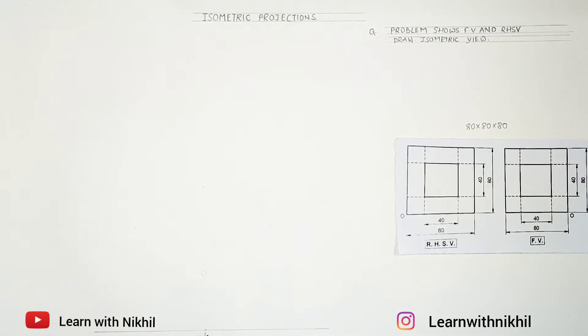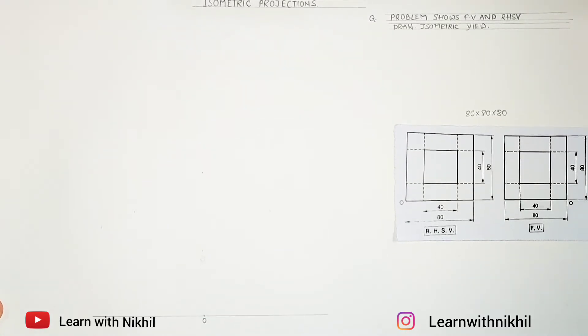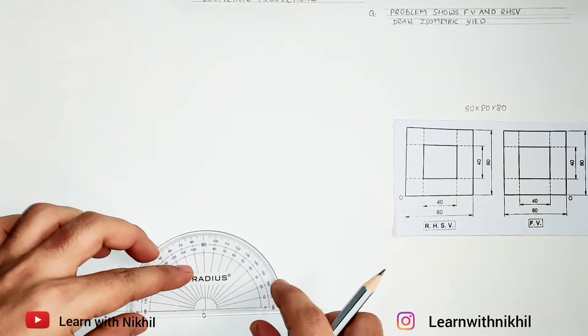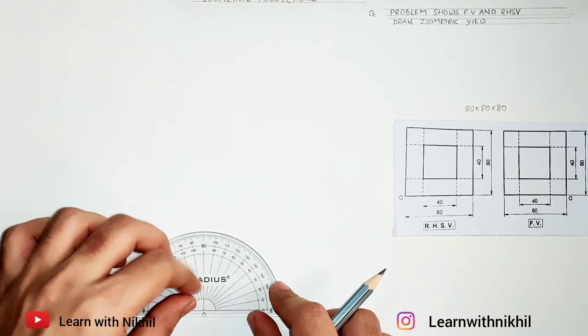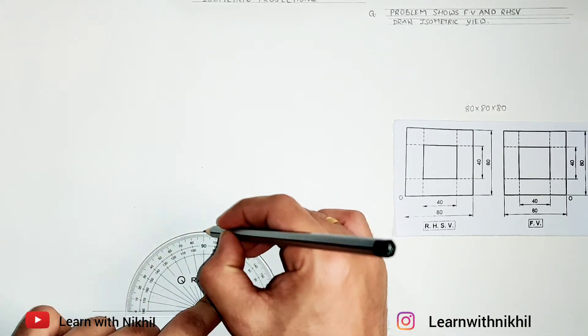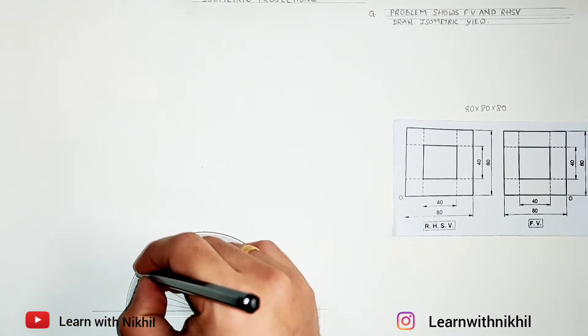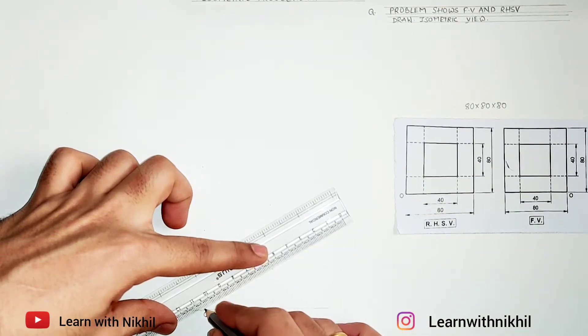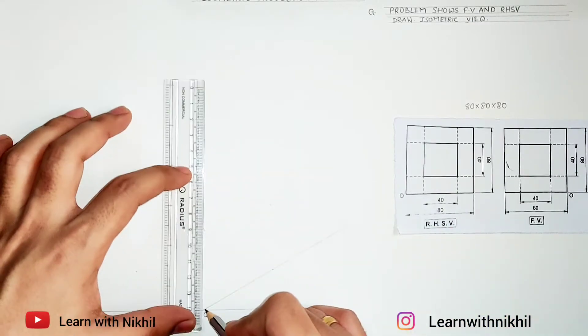So first step, mark a point O. This is the center point O. From that center point O we'll draw three angles that will be 30 degree, 90 degree, and 30 degree. These are the steps we do in each and every sum.